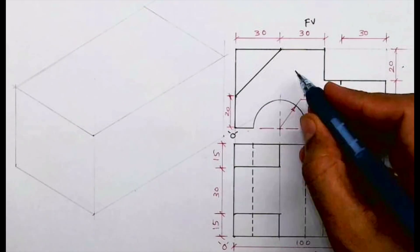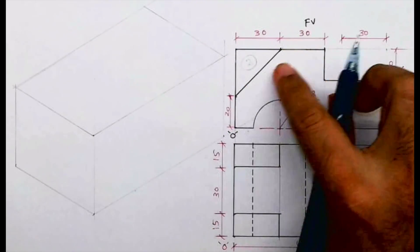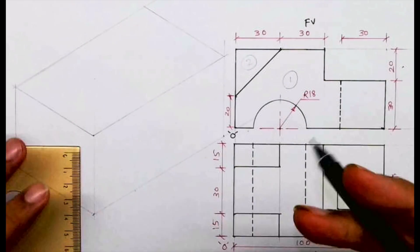If you see the front view, there are two parts: part one and two. Out of this, part one is nearer to us, so we'll start with part one. Now if you see, this height is 20.